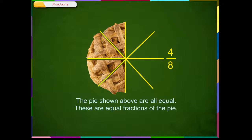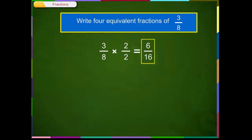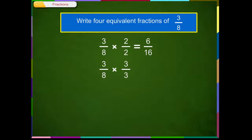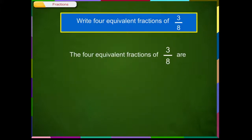Write 4 equivalent fractions of 3/8. We prefer multiplying the numerator and the denominator by the same number. So, 3/8 × 2/2 = 6/16. 3/8 × 3/3 = 9/24. 3/8 × 4/4 = 12/32. 3/8 × 5/5 = 15/40. The 4 equivalent fractions of 3/8 are 6/16, 9/24, 12/32, and 15/40.